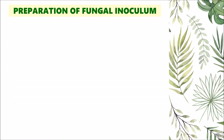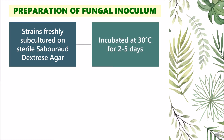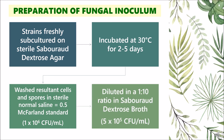The fungal inoculum was prepared as follows. Fungal strains were freshly subcultured on sterile Sabouraud dextrose agar and incubated at 30 degrees Celsius for 2 to 5 days. The resultant cells and spores were washed into sterile normal saline, and the turbidity was adjusted to a 0.5 McFarland standard equivalent, resulting in 1,000,000 CFU per ml. The suspension was further diluted 1:10 in Sabouraud dextrose broth to give 500,000 CFU per ml.